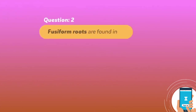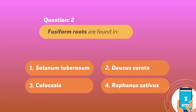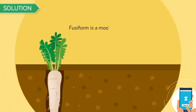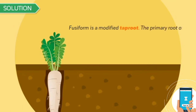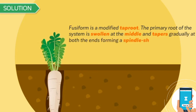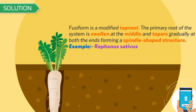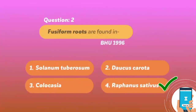Question 2: Fusiform roots are found in — 1. Solanum tuberosum, 2. Daucus carota, 3. Colocasia, 4. Raphanus sativus. This question was asked in BHU, 1996. Solution: fusiform is a modified taproot where the primary root is swollen at the middle and tapers gradually at both ends, forming a spindle-shaped structure. Example: Raphanus sativus. Hence, option 4 is correct.